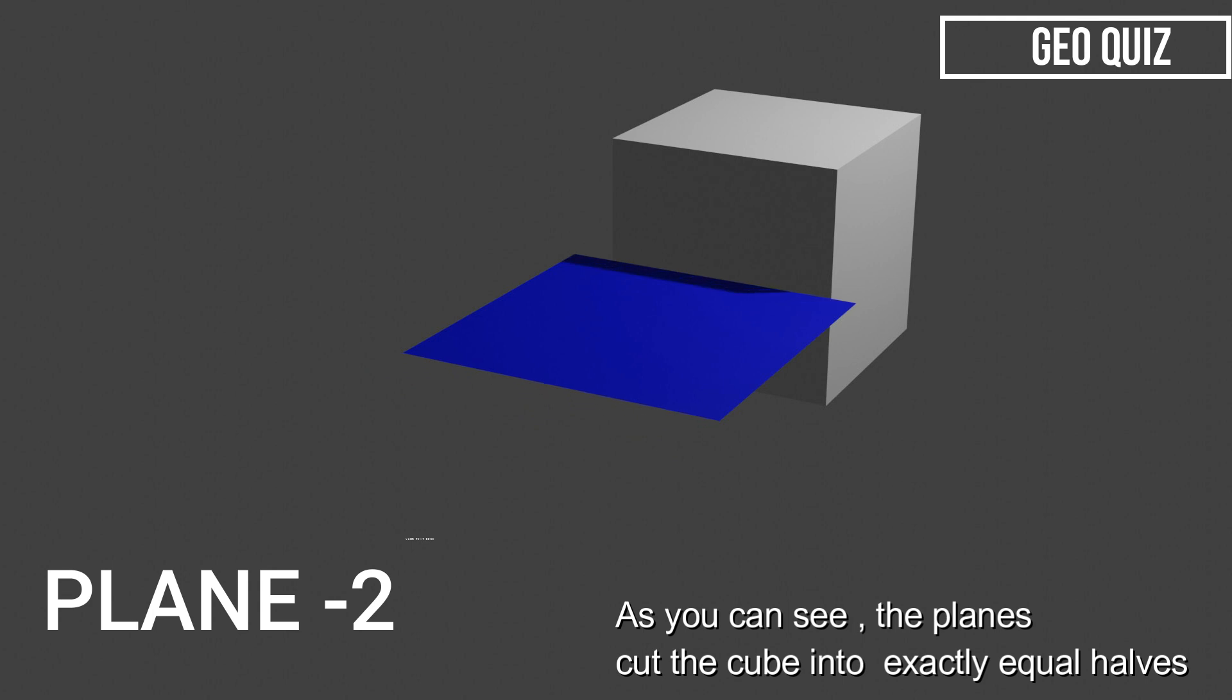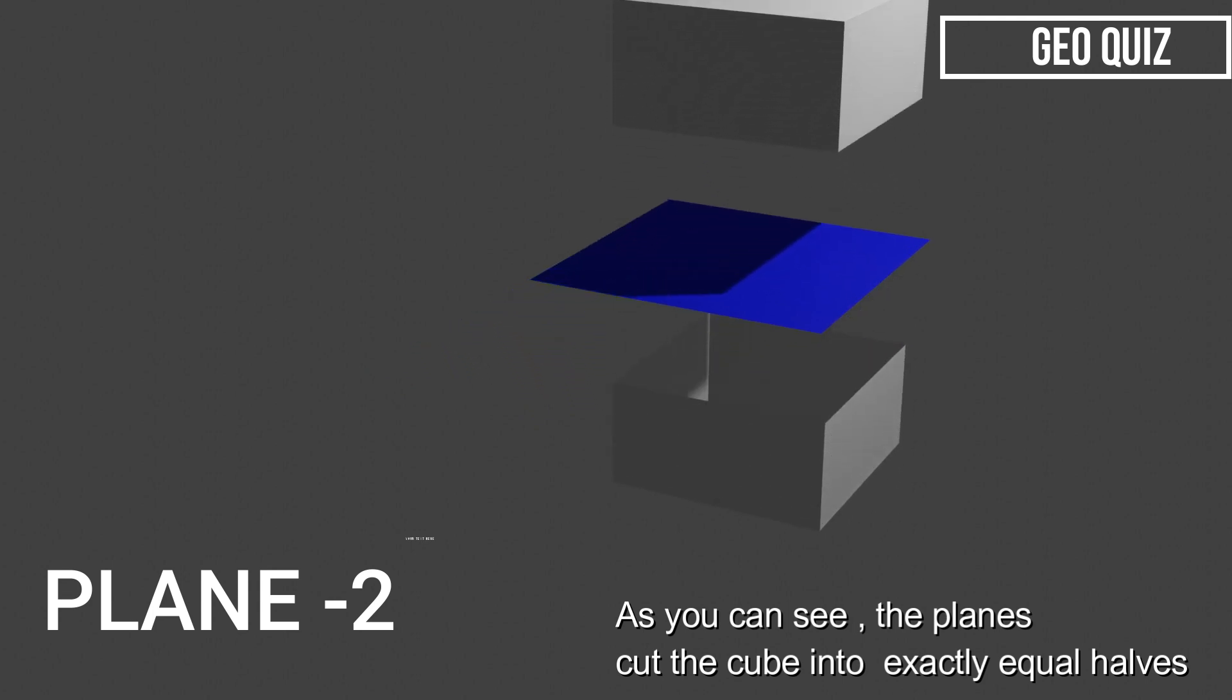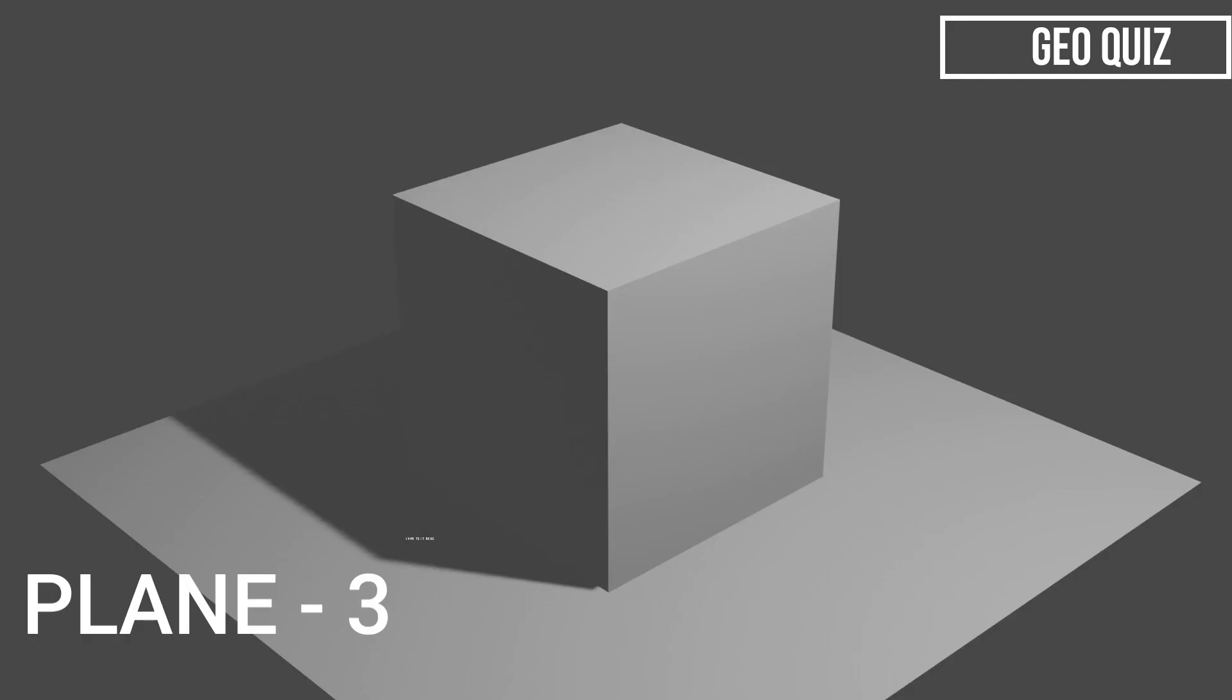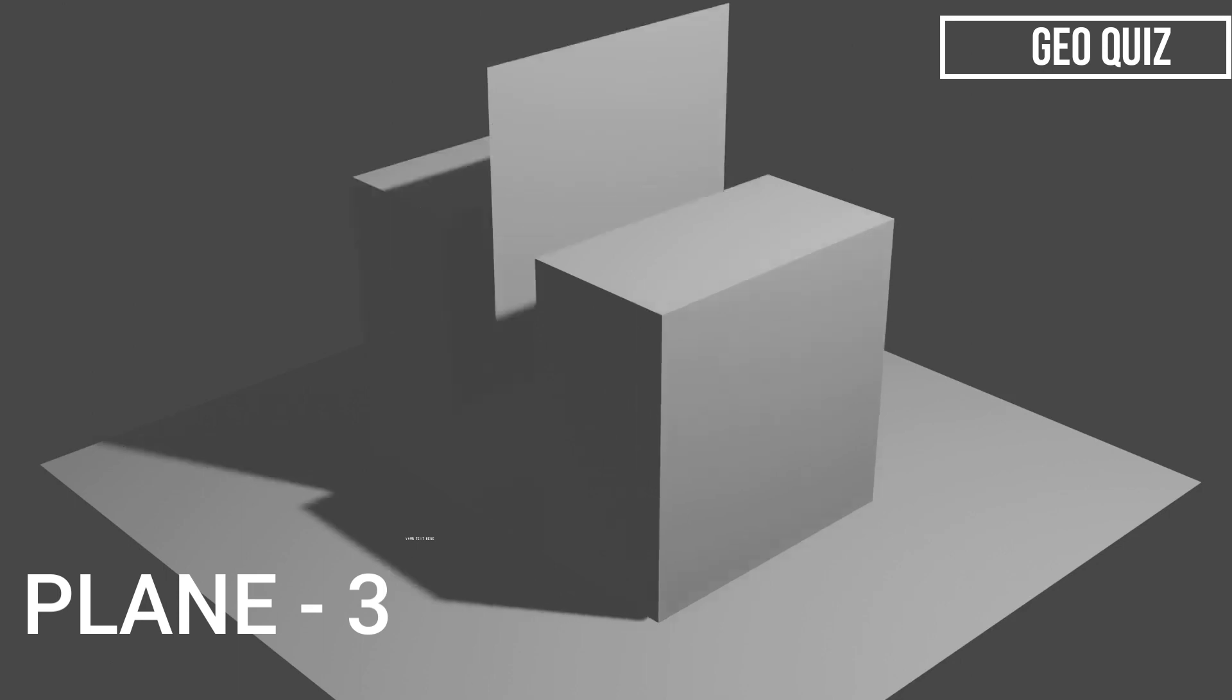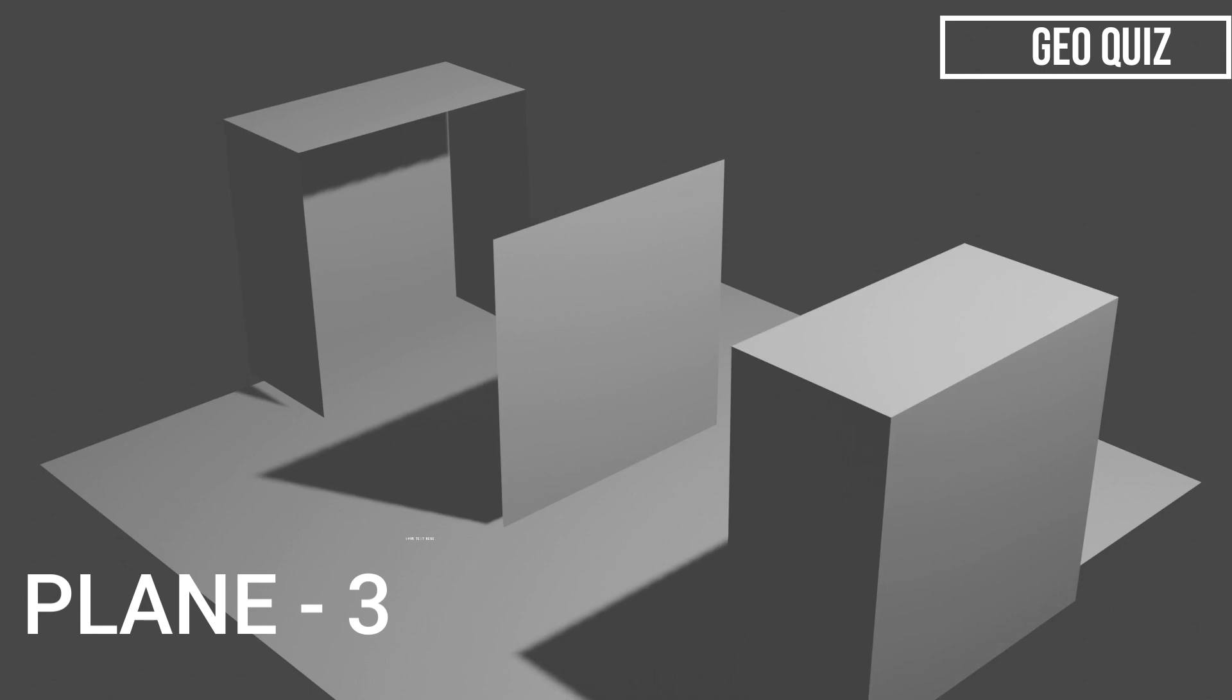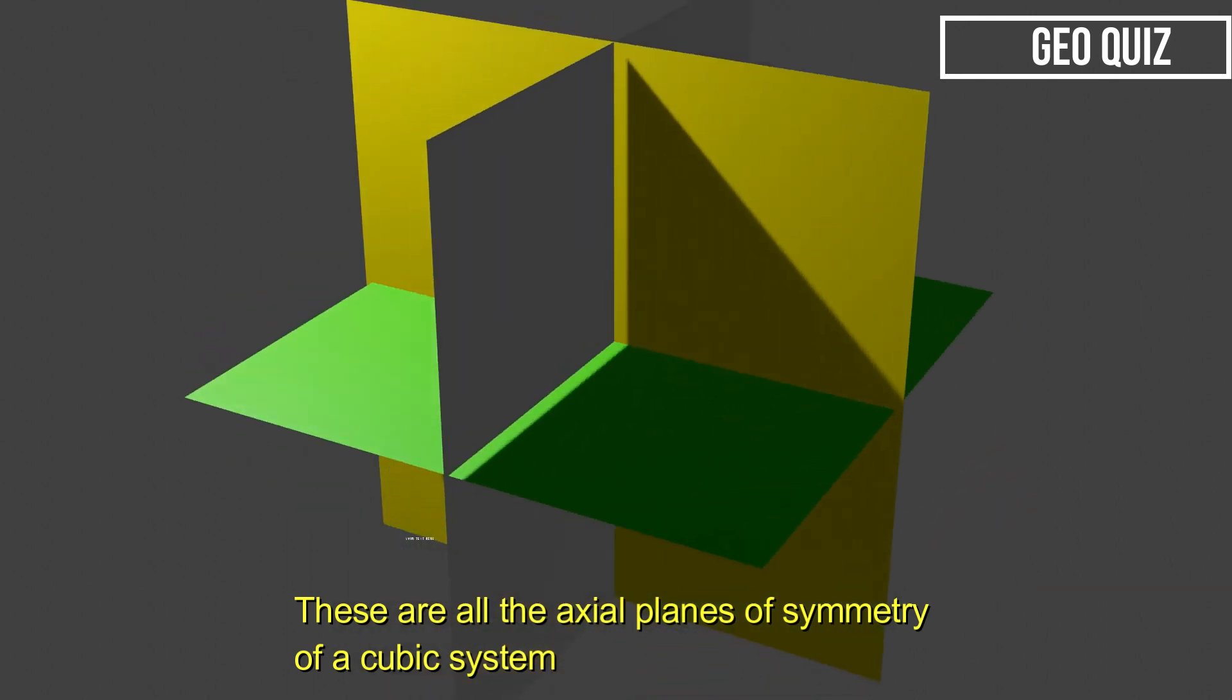As you can see here that the planes cut the cube into 2 exactly equal halves. These are all the axial planes of a cubic system.